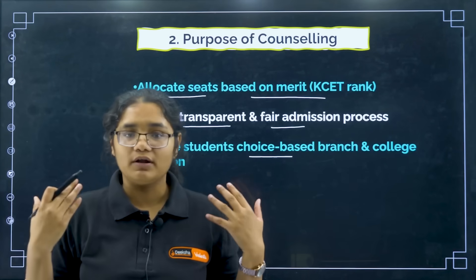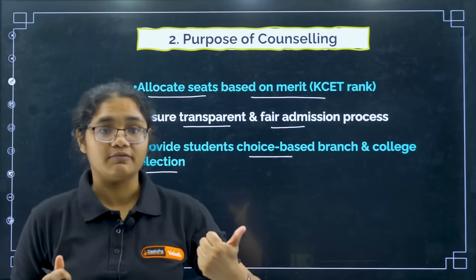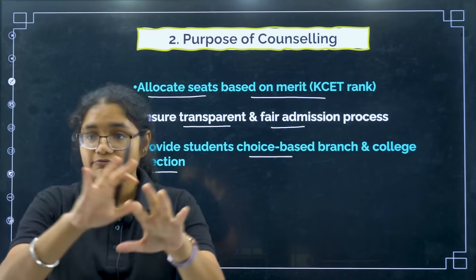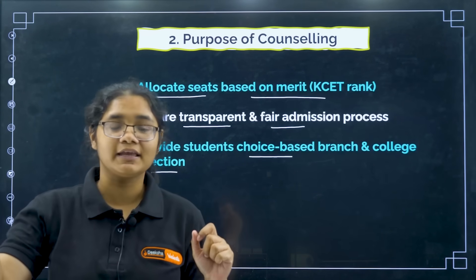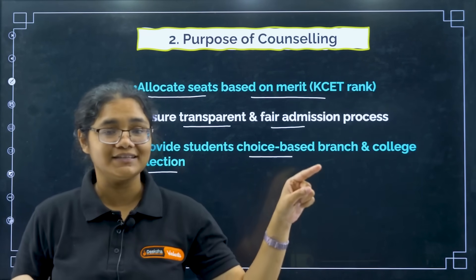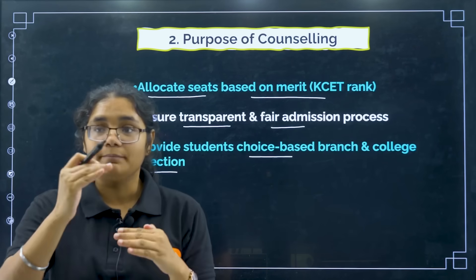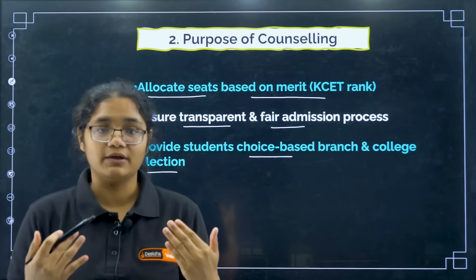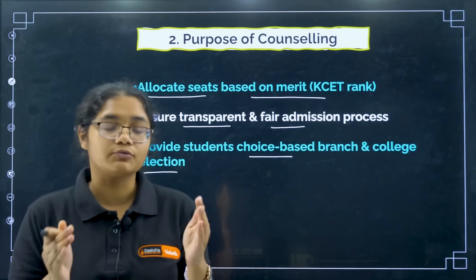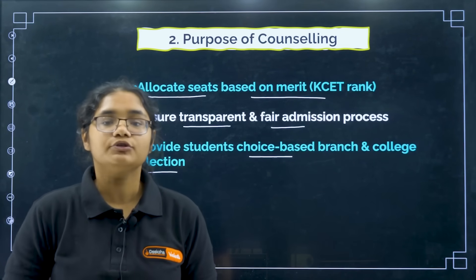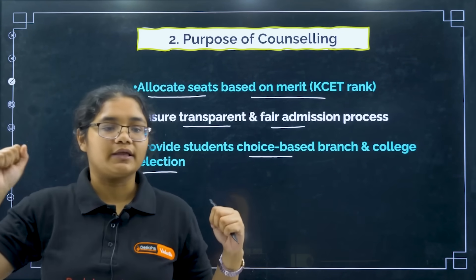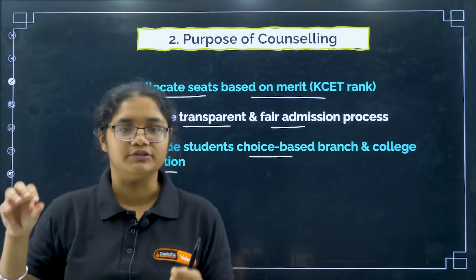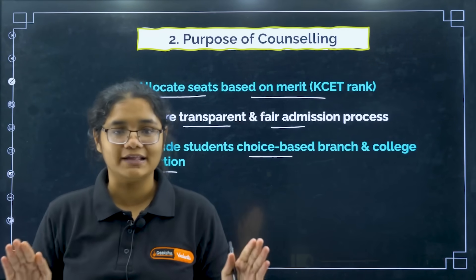Suppose I have got a very good rank — I am eligible for RV College, BMS College, and so many colleges. I want ECE in BMS or CS in RV. So based on my choices and my dream college, I will be able to do that through this counselling process. KEA is not just assigning colleges automatically based on rank — it's not like 'your rank is this, take this college.'